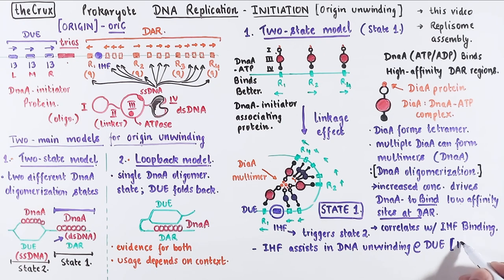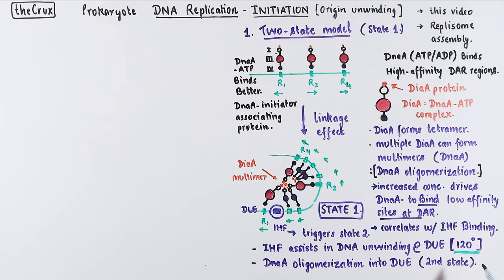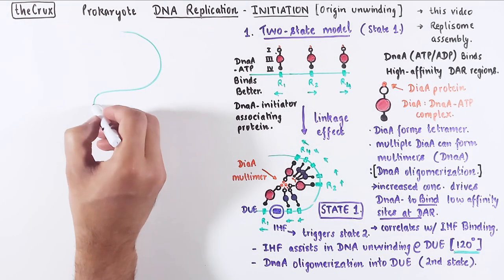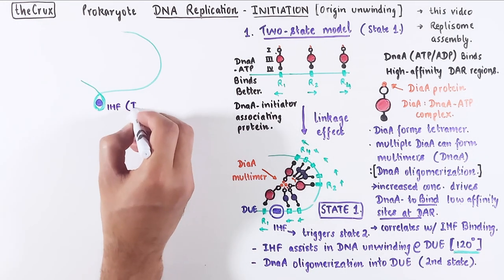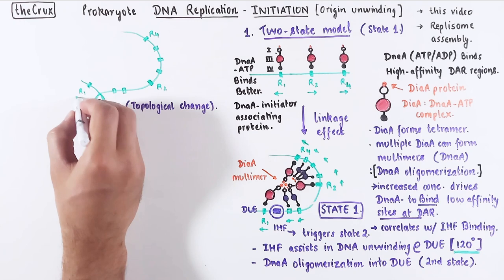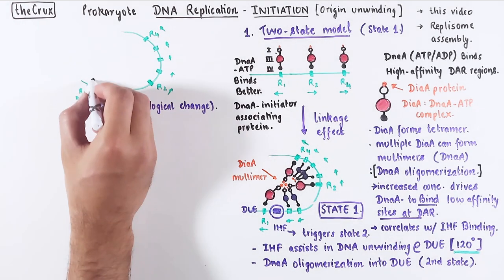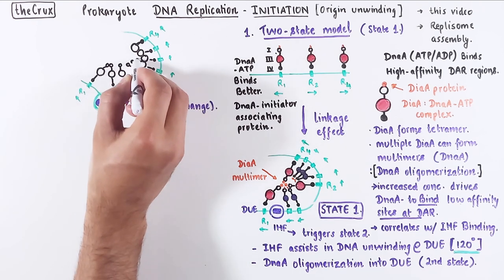The unwinding, or DNA melting, is caused because IHF binding causes a 120-degree bend in the DNA. The unwinding then allows DnaA oligomerization into the DUE region, and that is the second state. Let's get a bit more concrete and see what this 120-degree bend actually does. I will start the visualization by emphasizing that the binding of IHF causes DNA torsion, which is a fancy word for change in DNA topology. All this change occurs in the backdrop of a stable state 1, which consists of DnaA stably bound to the DAR region at both low- and high-affinity sites. This state 1 is also stabilized by DiaA.